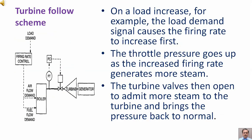On a load increase, for example, the load demand signal causes the firing rate to increase first. The throttle pressure goes up as the increased firing rate generates more steam. The turbine valves then open to admit more steam to the turbine and bring the pressure back to normal.